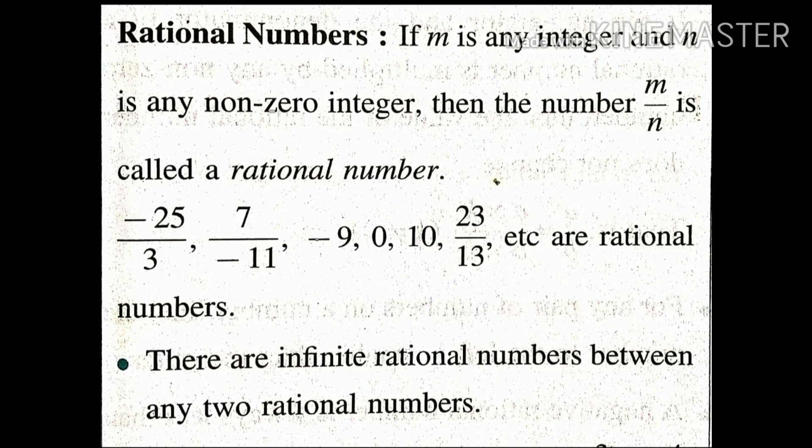In other words, we can say that numbers we can write in fraction form. Fraction means 2 upon 3, 5 upon 4, minus 5 upon 2. The first example is minus 25 upon 3.